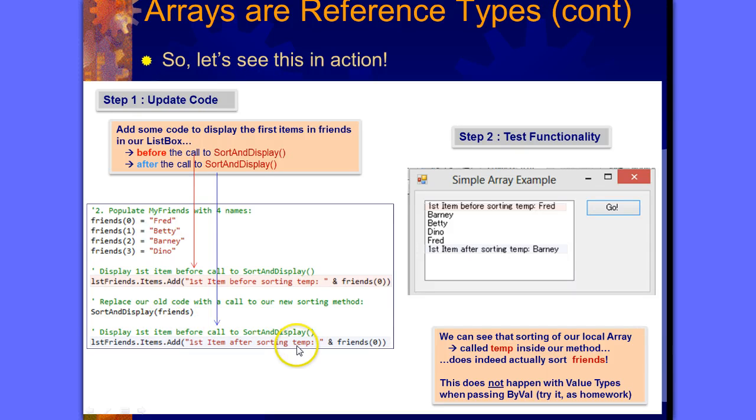So what is it? Is it still Fred? No, it's been sorted. So it's Barney. We can see that sorting our local array called temp inside our method does actually sort friends. This does not happen with value types.